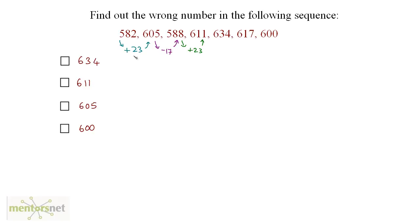A pattern is forming: add 23, then subtract 17, then add 23, then subtract 17. So let's subtract 17 from 611 and see if we get 634. But 611 minus 17 does not give 634 — it gives 594.